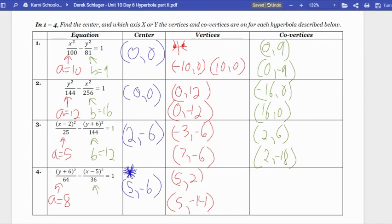Last one is underneath an x term, so we're going to go left and right. x is left and right, and our distance is 6, so we're going to go left 6: 5 minus 6 is -1. And we're going to go right 6: 5 plus 6 is 11. All right, next video we'll work on the next step.